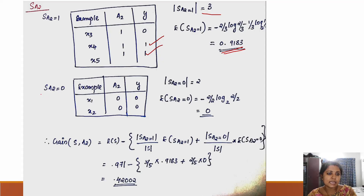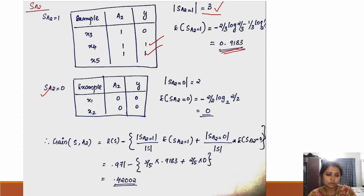For A2 equals 0, the entropy value is 0 — since minus (2/2) log (2/2) and log 1 equals 0. So the gain for A2: (3/5) times 0.9183 plus (2/5) times 0 gives the gain value of 0.42002.